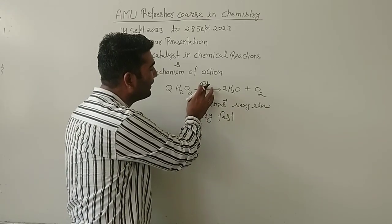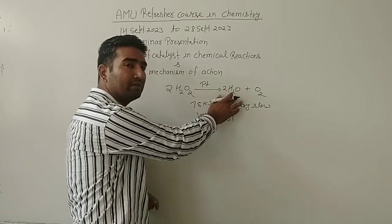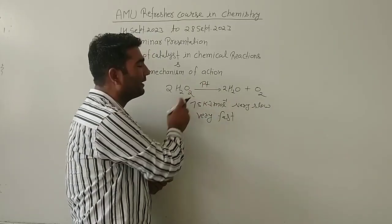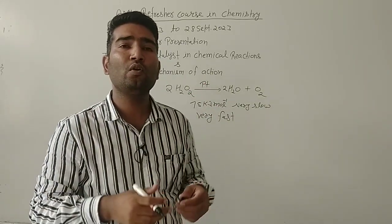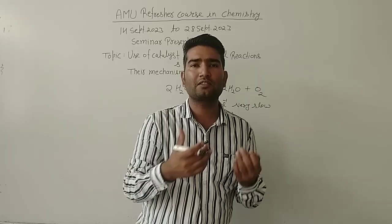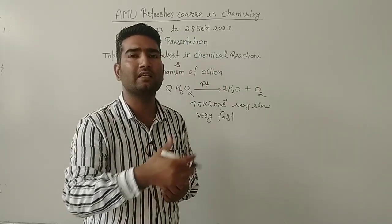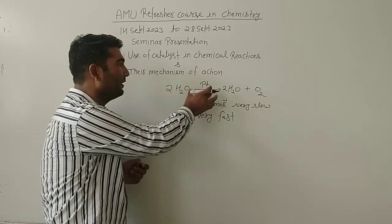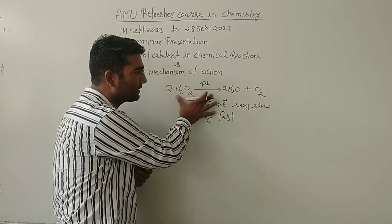Platinum increases the speed of this reaction. We can say platinum is the catalyst for this reaction because catalysts are the substances which increase the speed or rate of a chemical reaction.